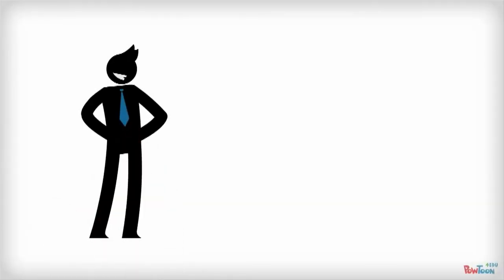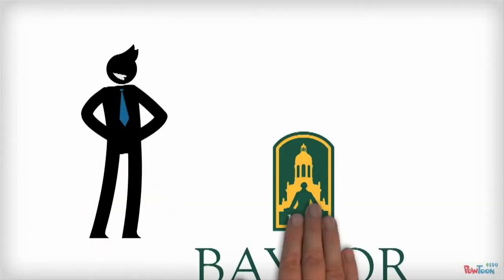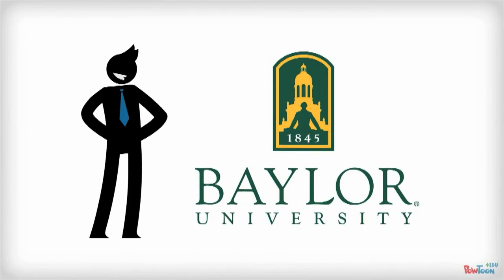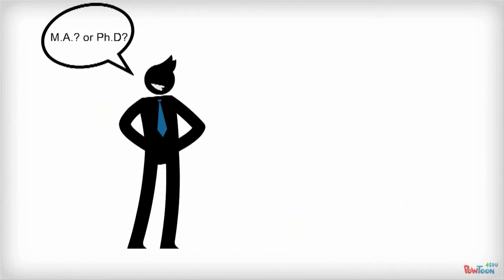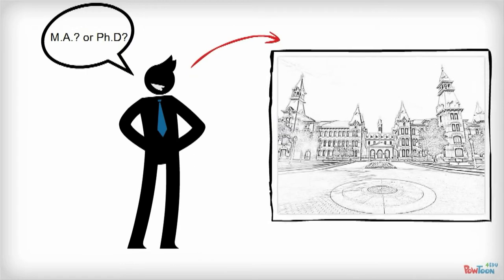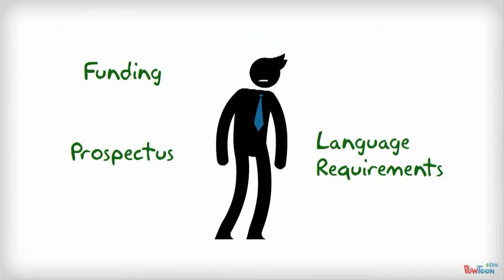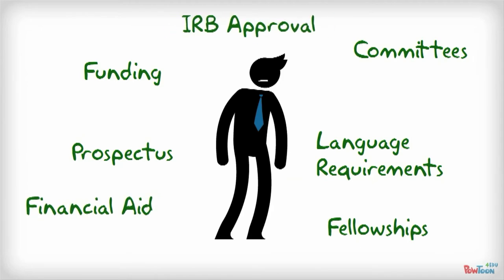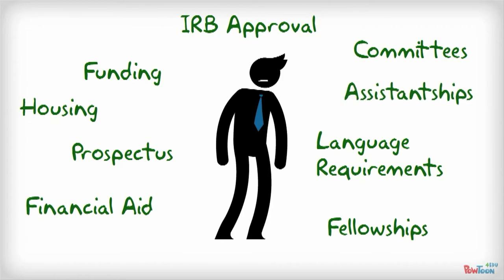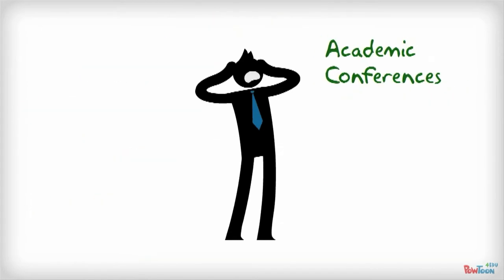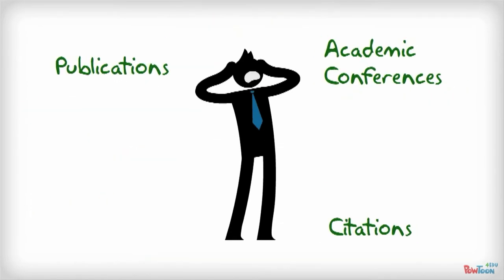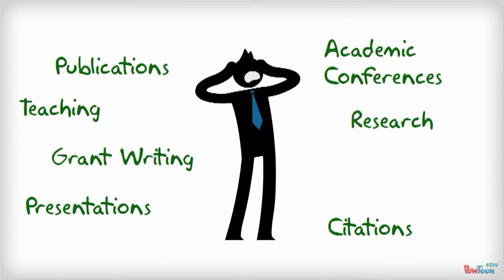This is Rodney. Rodney is a new graduate student at Baylor University. Rodney hopes to earn an advanced degree because he wants to work in academia. But there's a lot about grad school that Rodney doesn't understand, and there is a lot about academia that Rodney needs to learn.